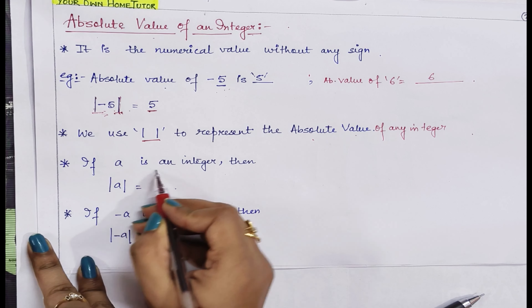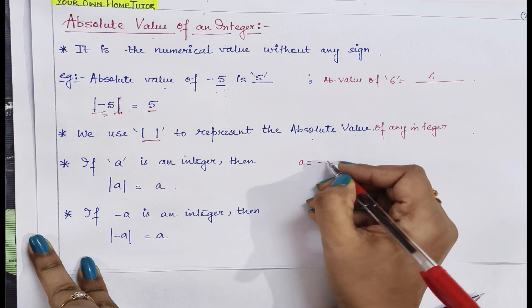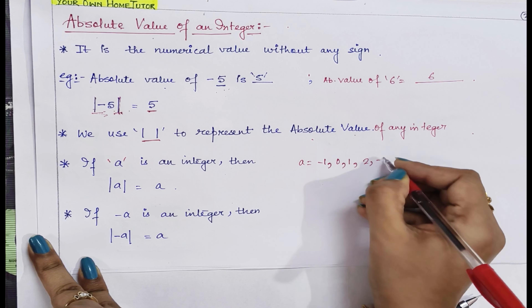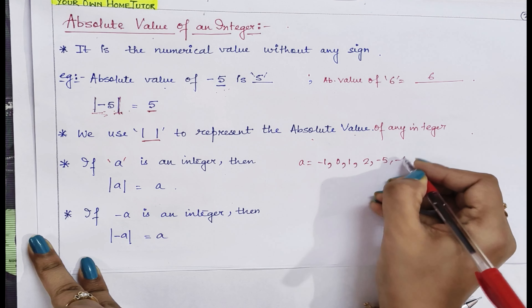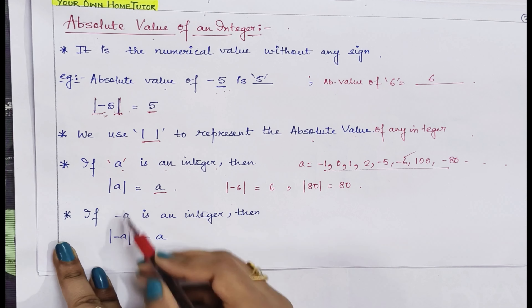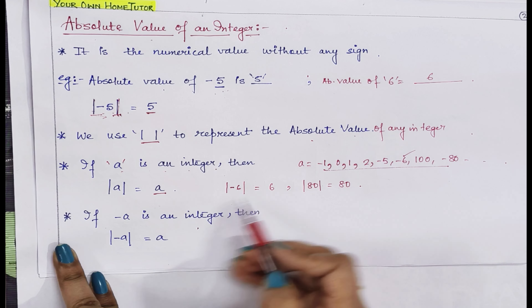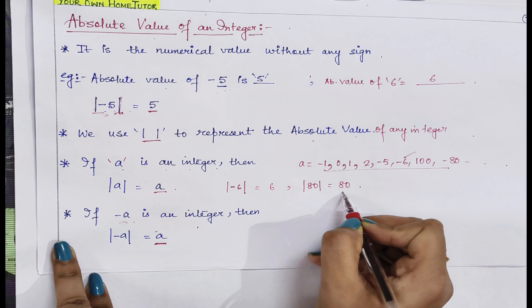Suppose a is any integer — it can be 1, minus 1, 0, 2, minus 5, minus 6, 100, minus 80, anything. Then the absolute value of a will be the number a itself. For example, the absolute value of minus 6 will be 6, or the absolute value of 80 will be 80. If a is preceded with a negative sign, we still get only a as the absolute value.